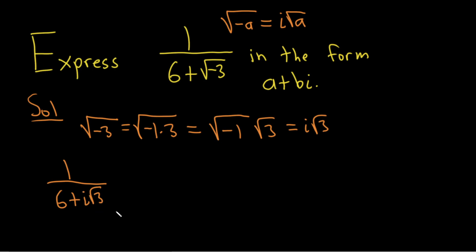And so the idea now is we're going to multiply this number by what's called its complex conjugate. So the complex conjugate of a complex number a plus bi is simply a minus bi. So in this case, we want to multiply the bottom by 6 minus i square root of 3.